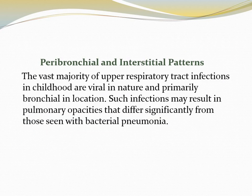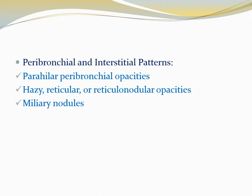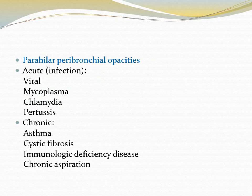Peribronchial and interstitial patterns: the vast majority of upper respiratory tract infections in childhood are viral in nature and primarily bronchial in location. Such infections may result in pulmonary opacities that differ significantly from those seen with bacterial pneumonia. We have perihilar peribronchial opacity, hazy reticular or reticulonodular opacity, and miliary nodules. Perihilar peribronchial opacity is either acute, caused by infection including viral, mycoplasma, chlamydia, or pertussis, or chronic as in asthma, cystic fibrosis, immunologic deficiency disease, and chronic aspiration.